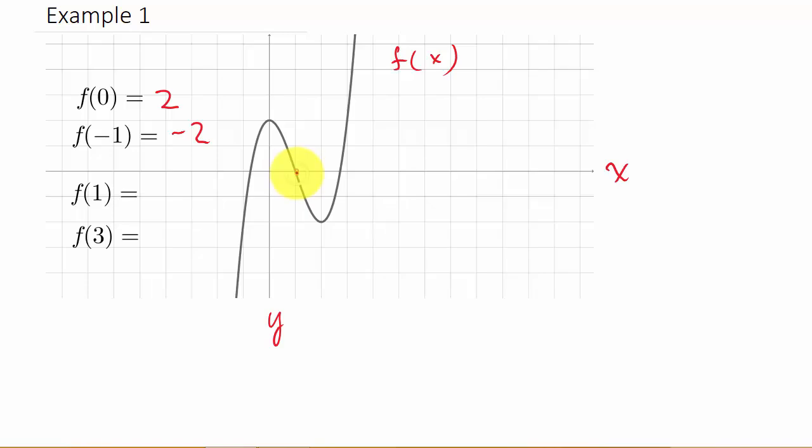Well, we don't need to move anywhere, do we? We're already hitting the graph. The graph crosses the x-axis at 1. So what would this y-value be? We didn't move up or down, so the y-value is 0. So f of 1 is 0.